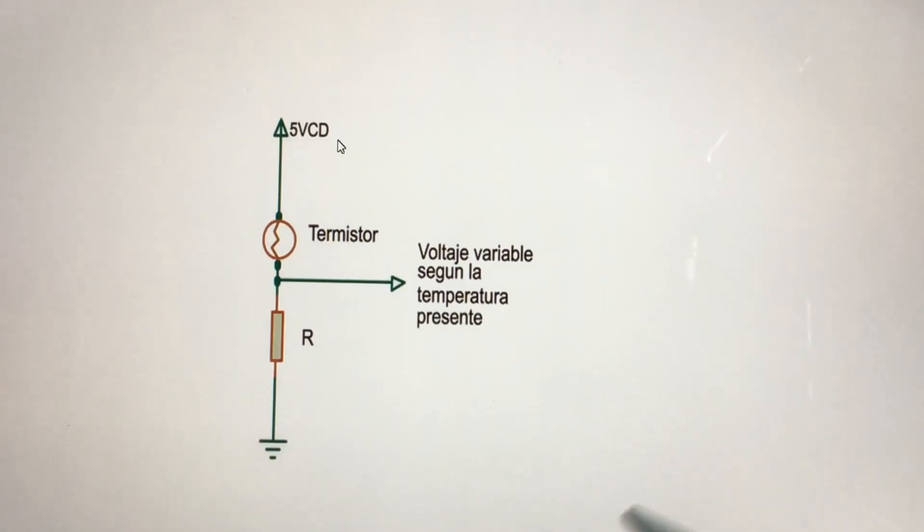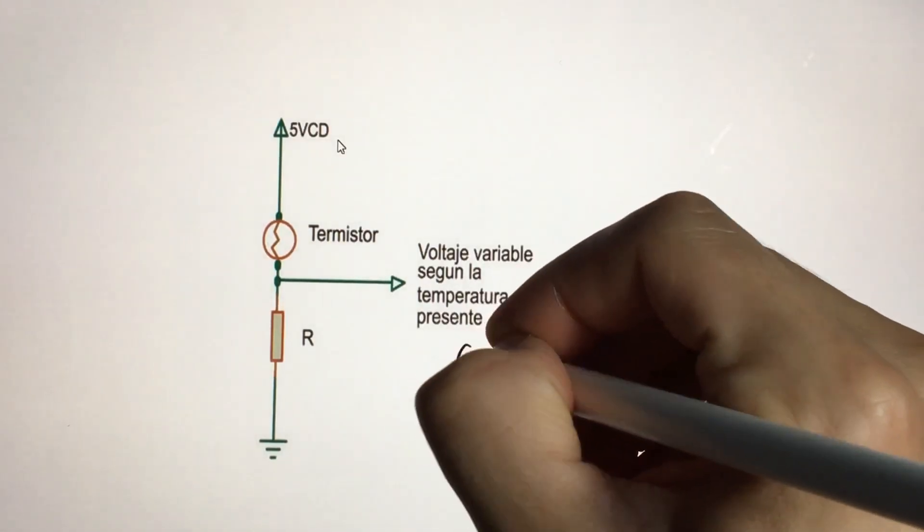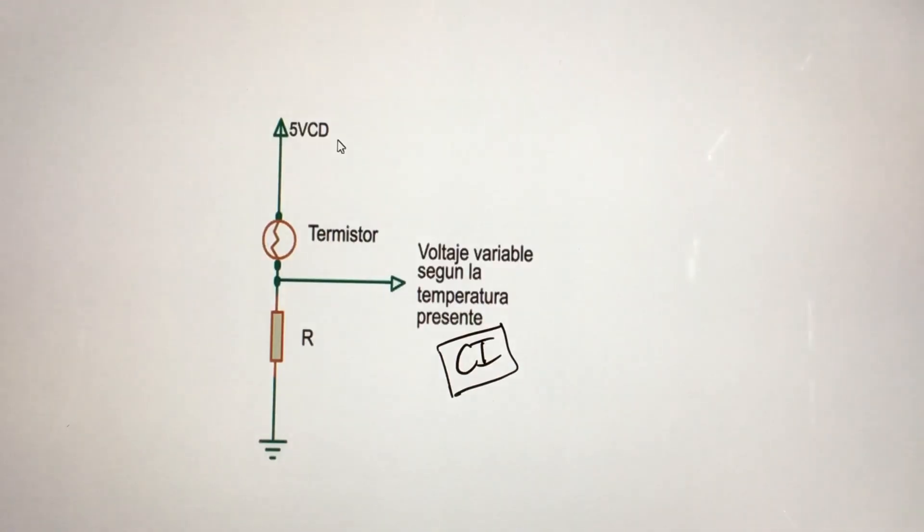So, how does a temperature sensor work in a diagram? What the microprocessor, actually the integrated circuit, will feel is a voltage variation depending on the resistance of that sensor.